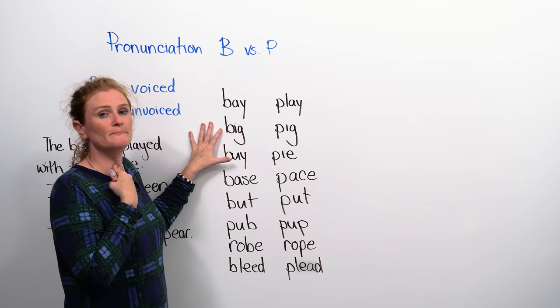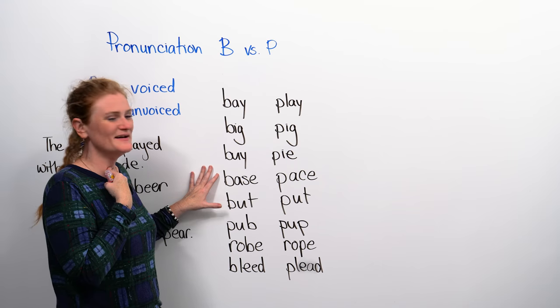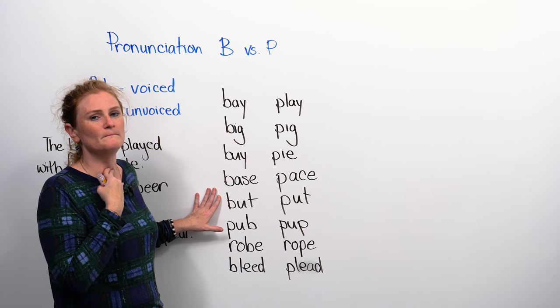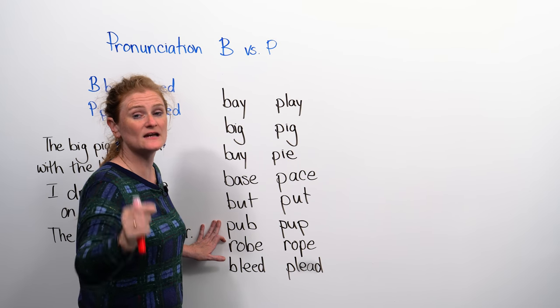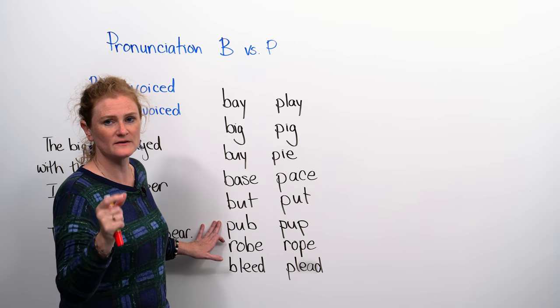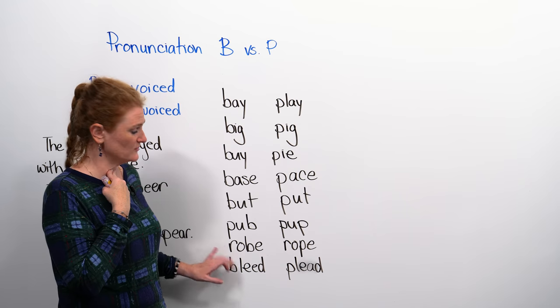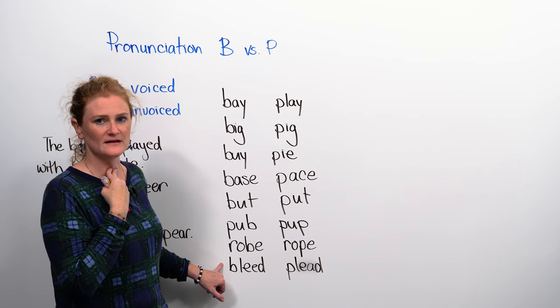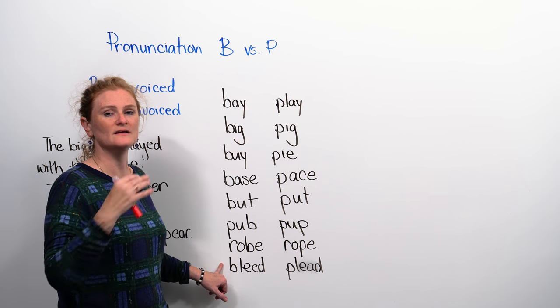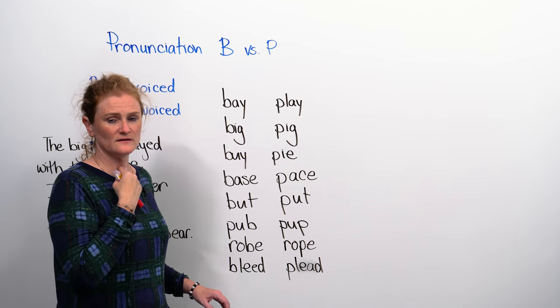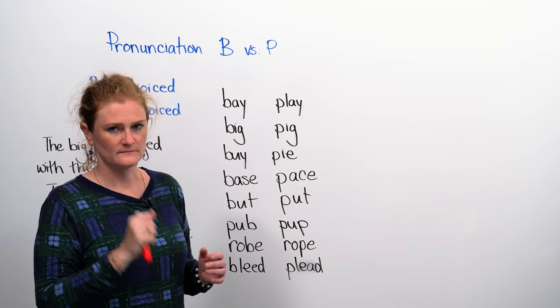Next word we have is big, by, base, but. Then we also have the B and the P at the end of the word. It's okay. Just make sure you vibrate the last word. Pub, robe, now this one's in the middle, and then we have a beginning, bleed. So I want you to practice the B. Make sure that when you say it, your throat is moving or vibrating. Excellent.